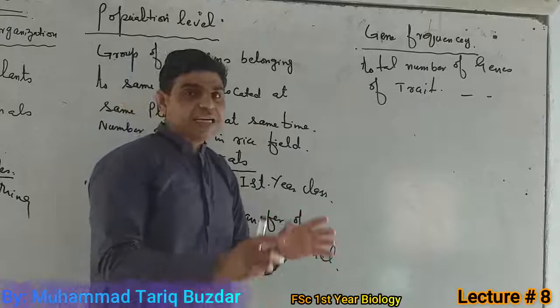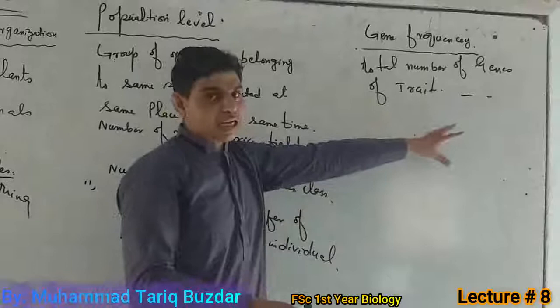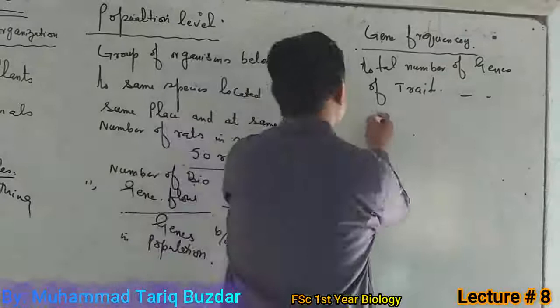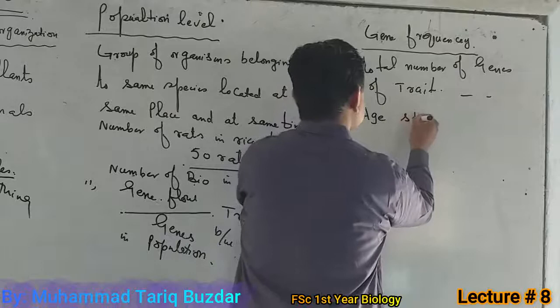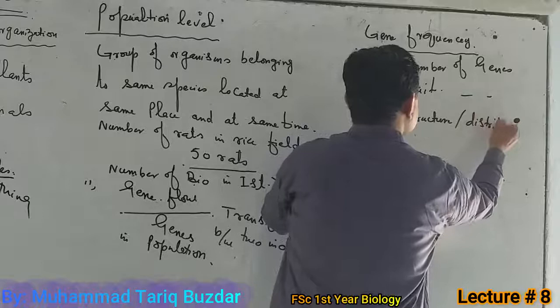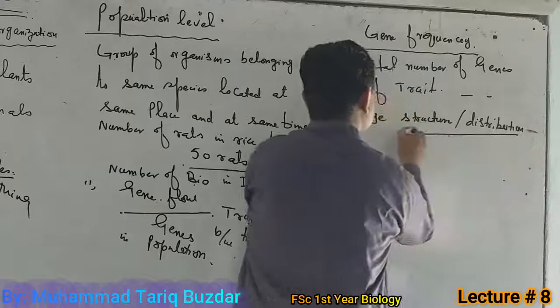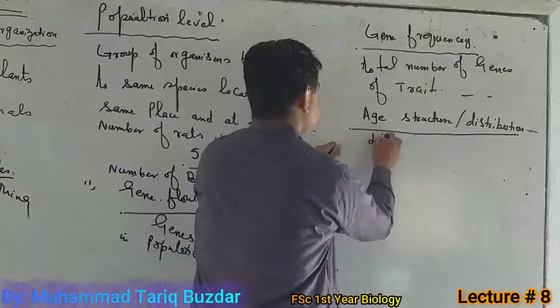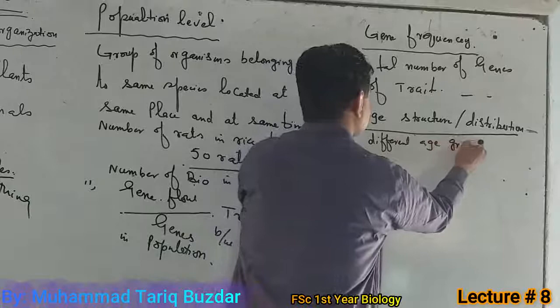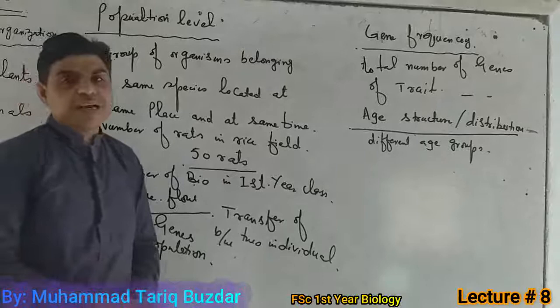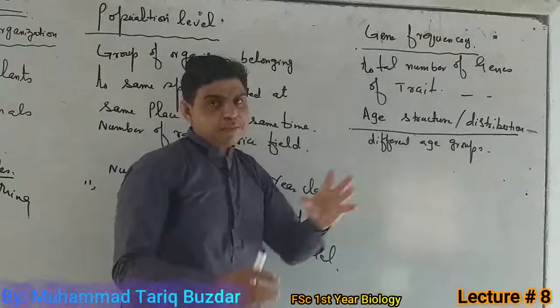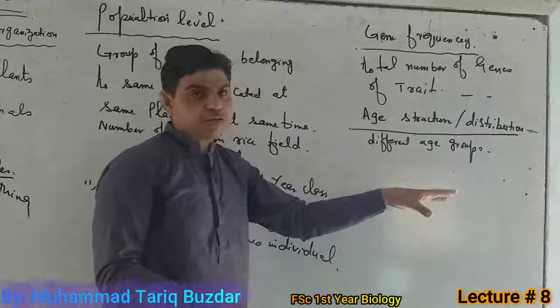When the genes control these characters, we will call it gene frequency. Another character is age distribution. The different age groups present in a population is called as age structure or age distribution.